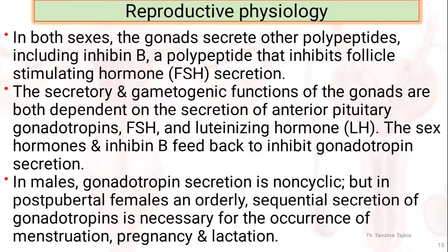The secretory and gametogenic functions of the gonads are both dependent on the secretion of anterior pituitary gonadotropins — that is, follicle-stimulating hormone (FSH) and luteinizing hormone (LH). The sex hormones and inhibin B feed back to inhibit gonadotropin secretion.